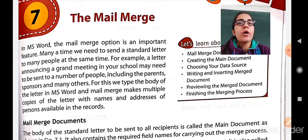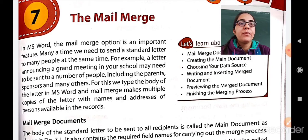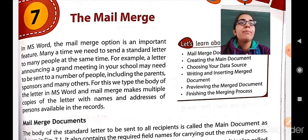You can type the body of a letter in MS Word and then mail merge will make multiple copies of that letter, typing the name and addresses of the persons available in your records — to whom you want to send the messages. This is the introduction of mail merge.